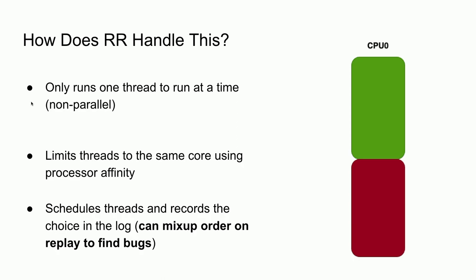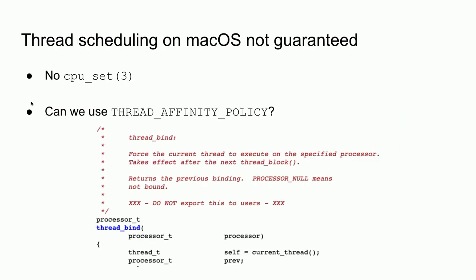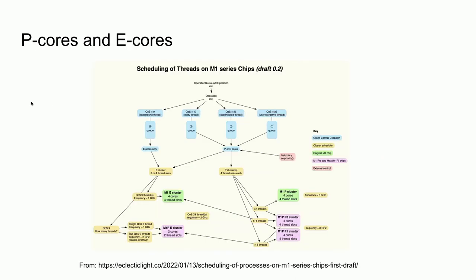Can we do this on macOS? Thread scheduling to a specific processor is not guaranteed — there's no CPU set. Thread affinity policy won't really work. If you look through the kernel you'll find thread_bind, which would actually do this in XNU, but it's marked 'do not export this to users.' And to make matters worse, on a modern MacBook Pro we've got P-cores and E-cores, which have different clocking — that becomes a problem for us.